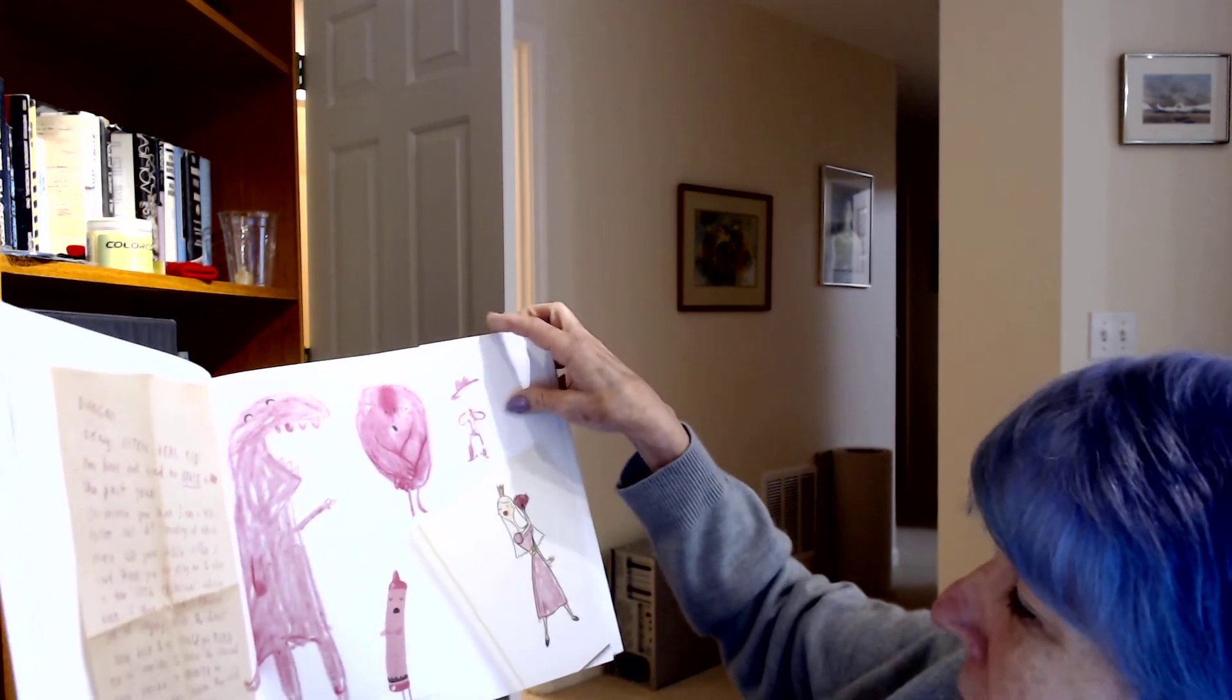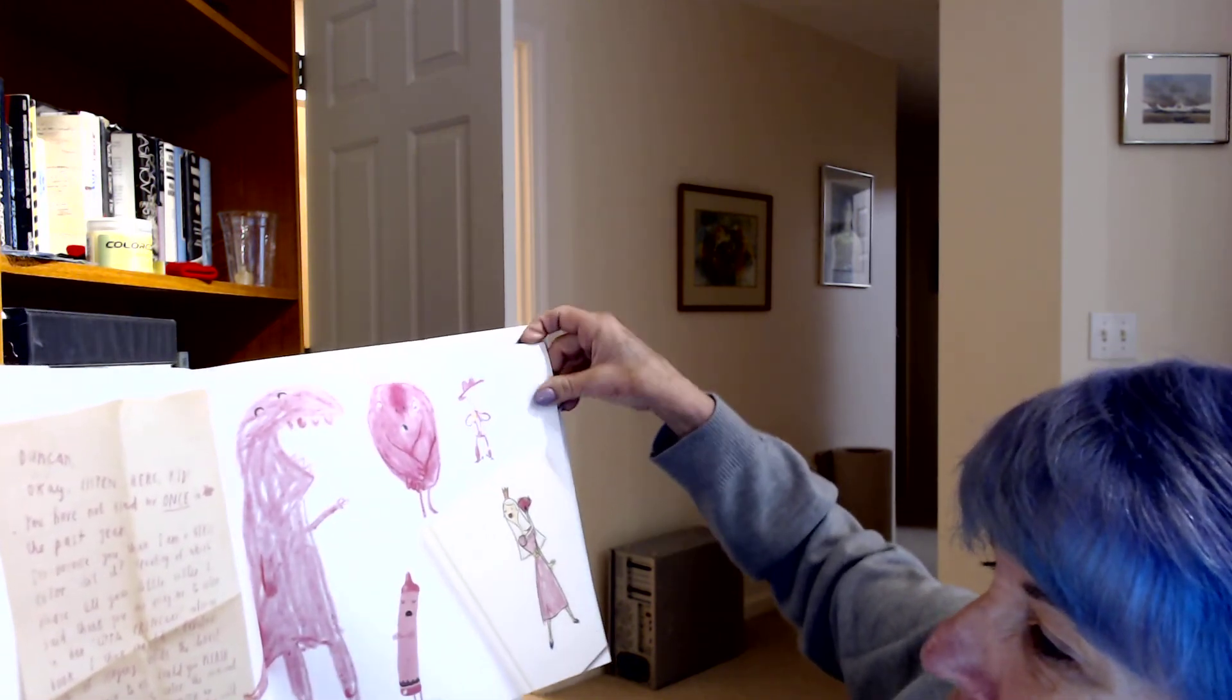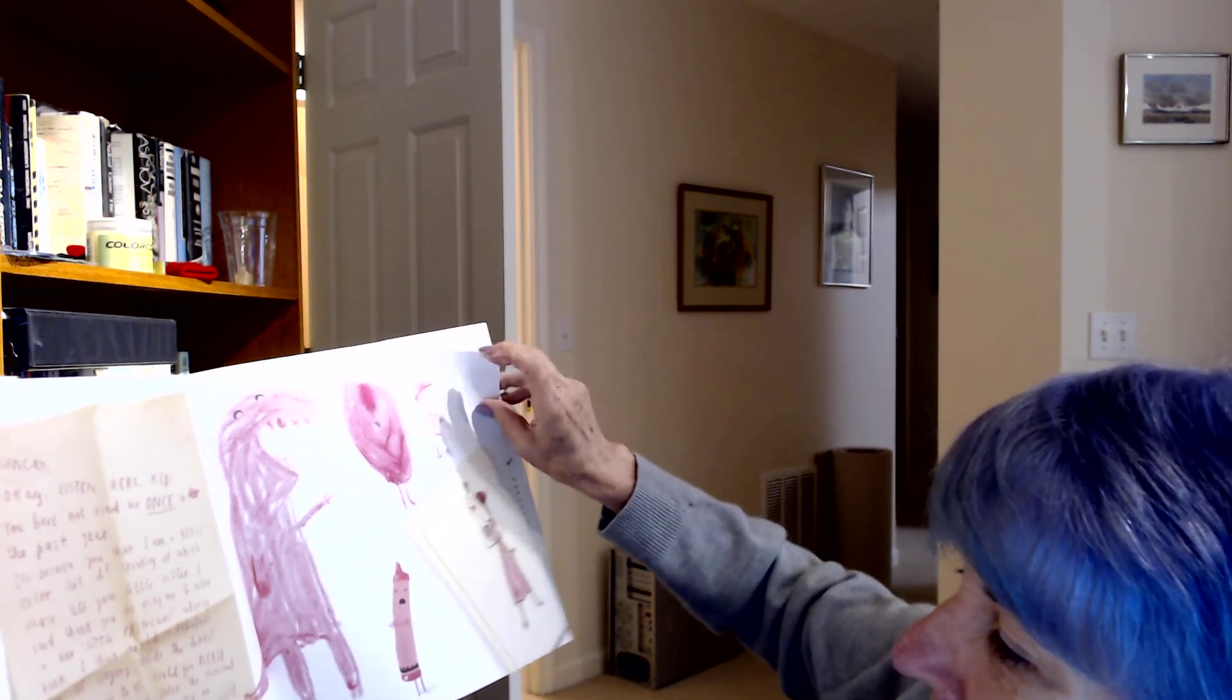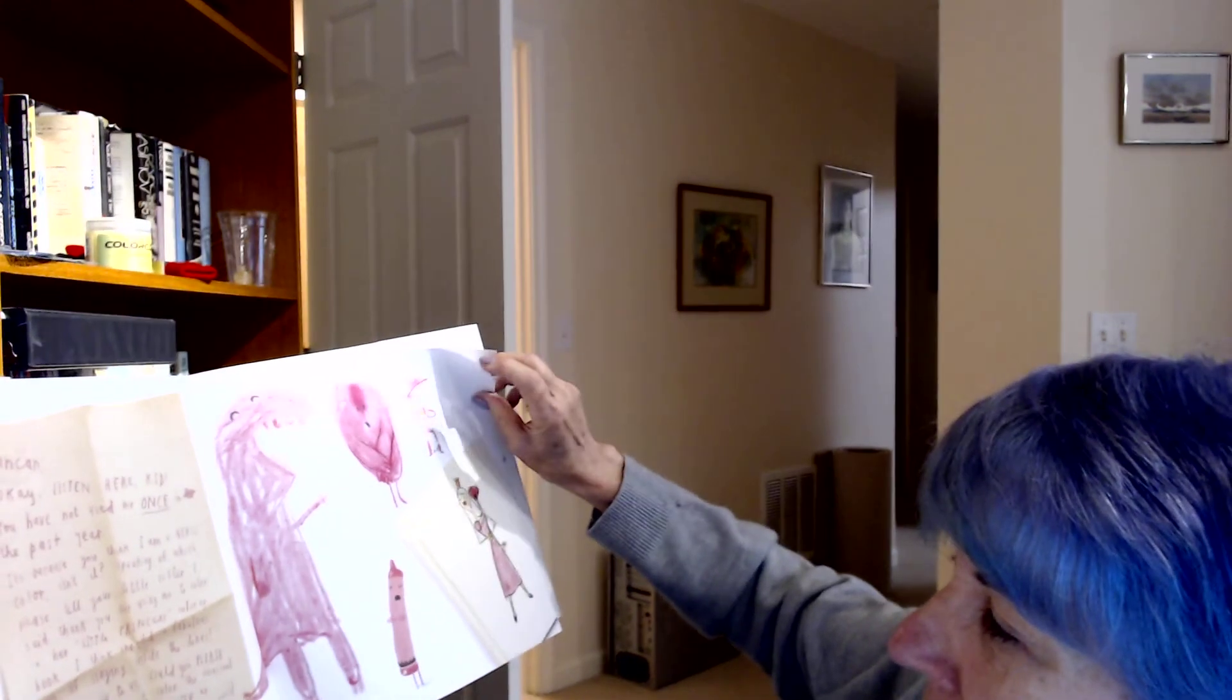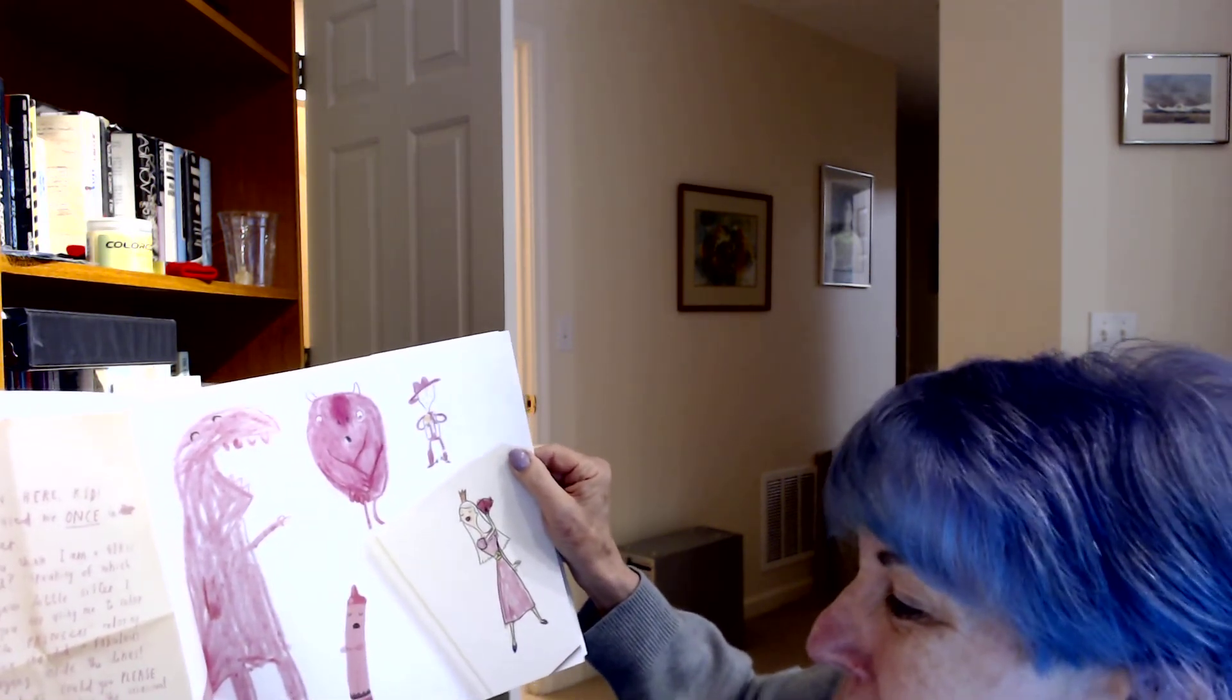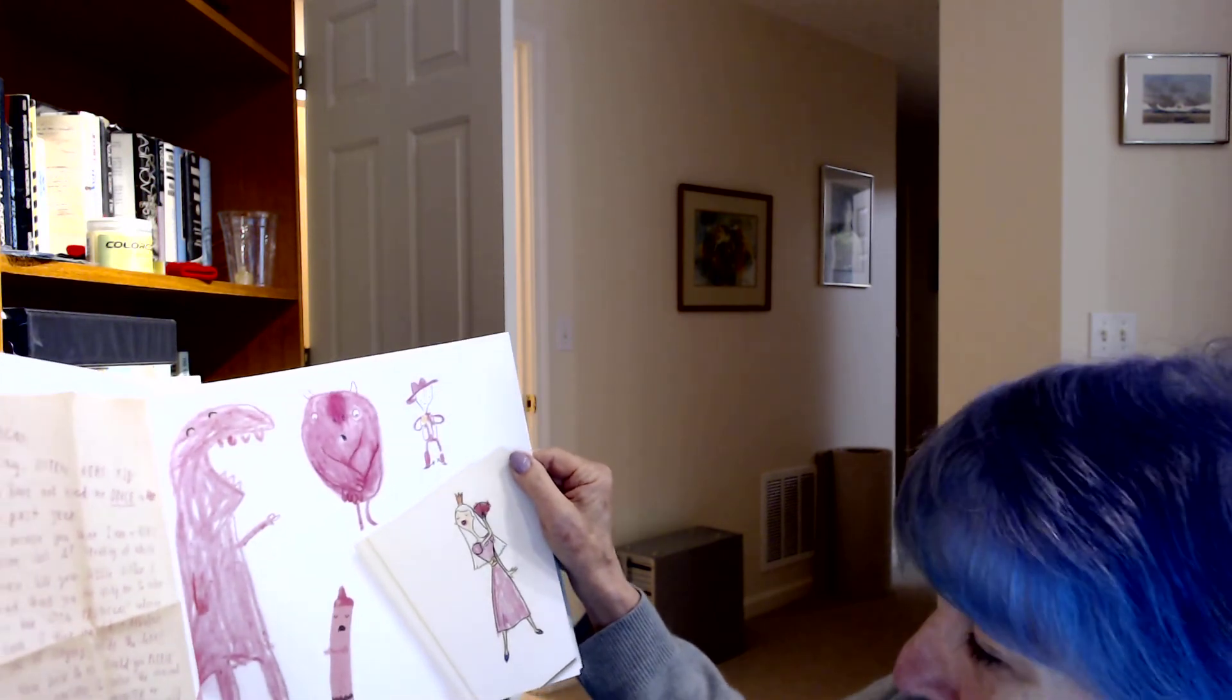Duncan. Okay. Listen here, kid. You have not used me once in the past year. It's because you think I'm a girl's color, isn't it? Speaking of which, please tell your little sister I said thank you for using me to color in her little princess coloring book. I think she did a fabulous job of staying inside the lines. Now, back to us. Could you please use me sometime to color in the occasional pink dinosaur or monster or cowboy? Goodness knows they could use a splash of color. Your unused friend, Pink Crayon.